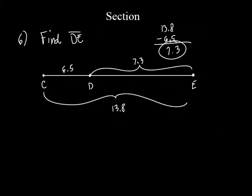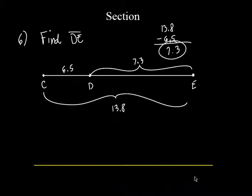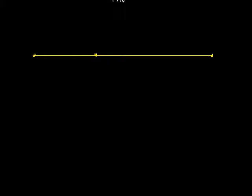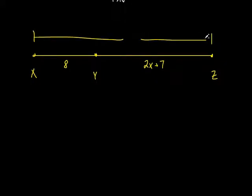Let's take a look at number 7. This time they actually do draw the picture out for you. They say this part is 8, and this part is 2X plus 7. I don't know exactly how long it is because I don't know what X is — so we're going to have to find X. And they tell you this as well: from here to here is 4X plus 3.